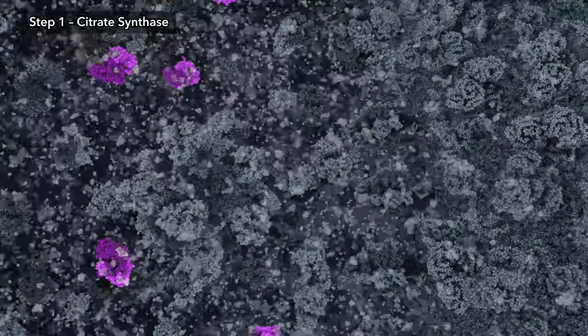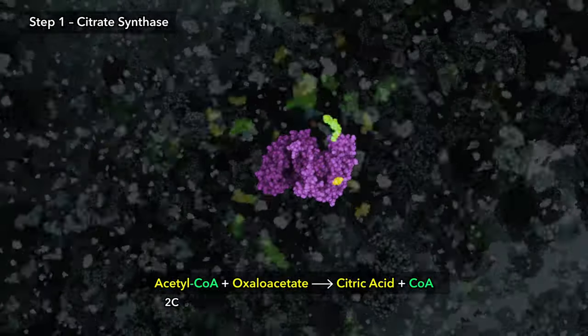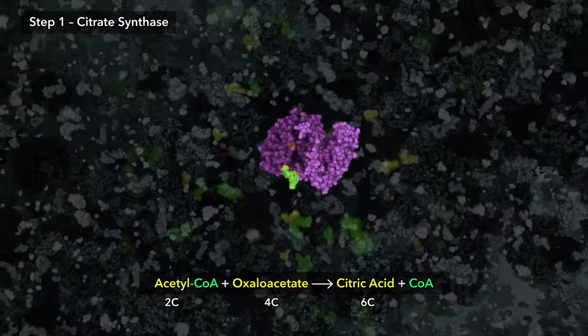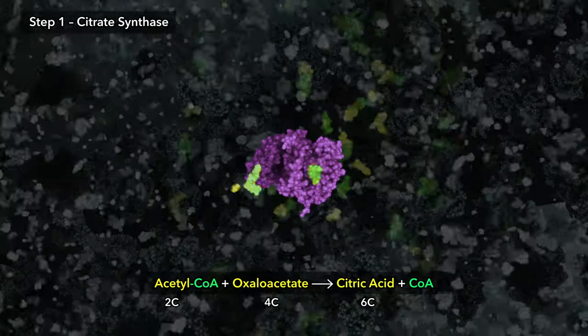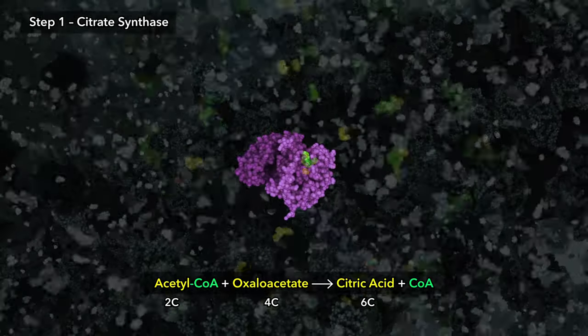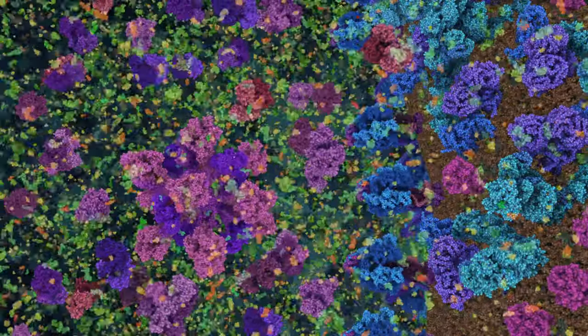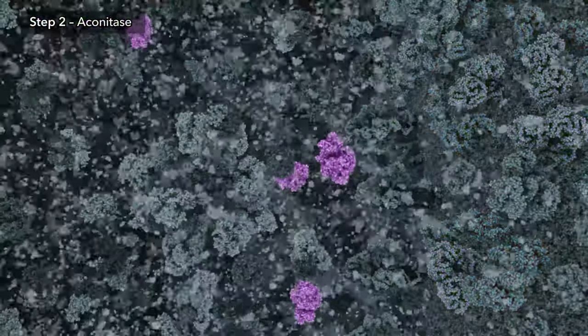Step one is the catalytic transfer of a two-carbon acetyl group from coenzyme A to four-carbon oxaloacetate, creating six-carbon citric acid, the molecule that gives the cycle its name. Citric acid is used by your cells for the biosynthesis of fatty acids, lipids and cholesterol, and is also the substrate for step two of the citric acid cycle.